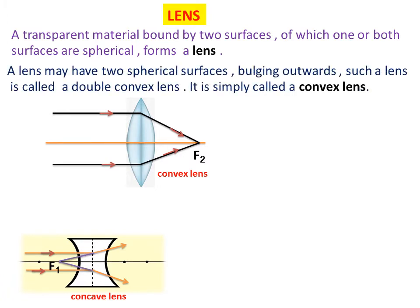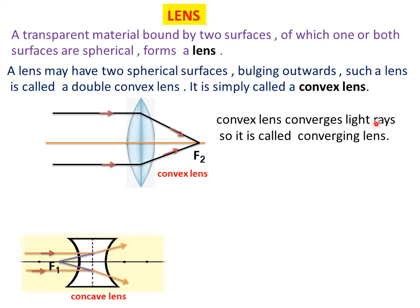Now we will discuss about convex lens. A lens may have two spherical surfaces bulging outwards. Such a lens is called a double convex lens, or simply a convex lens. It is thicker at the middle as compared to the edges. A convex lens converges light rays, so it is called a converging lens.